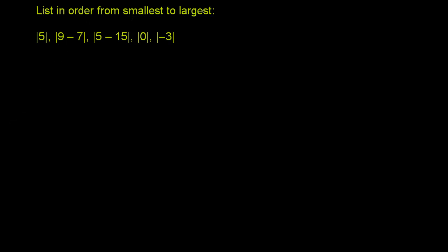We're told to list in order from smallest to largest each of these quantities. It looks like we have expressions inside of absolute value signs. As a bit of review, absolute value just means your distance from 0. Another way to think about it is if it's a negative number inside of the absolute value sign, it becomes positive. If it's already positive, it stays positive.